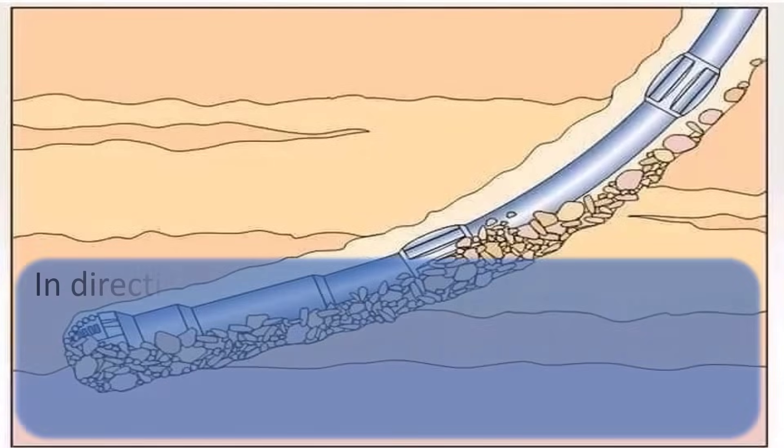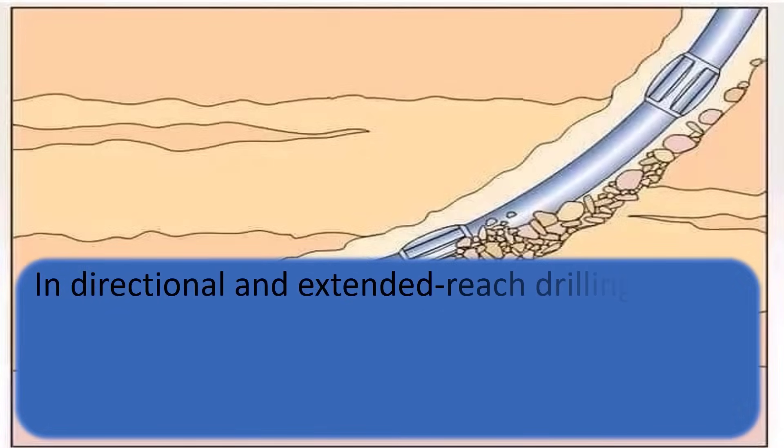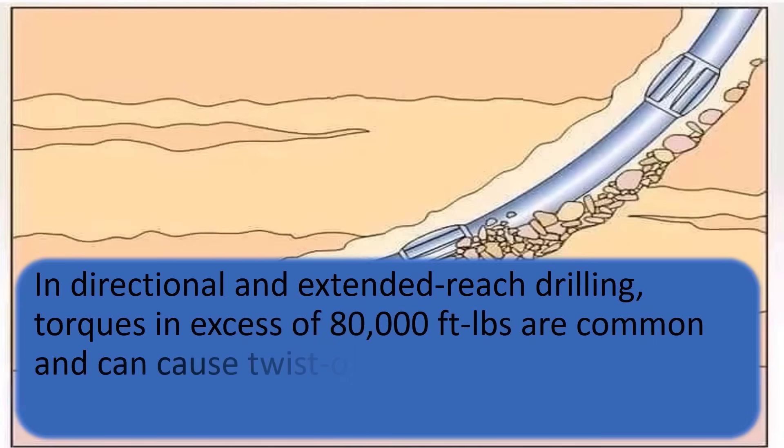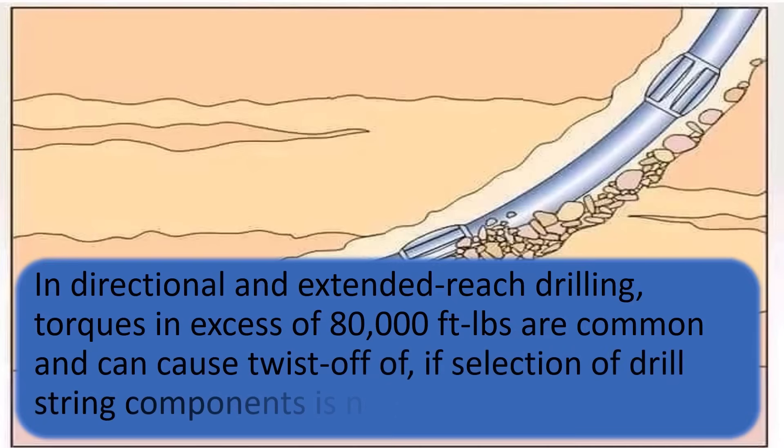However, in directional and extended reach drilling, torques in excess of 80,000 feet-pounds are common and can cause twist off if selection of drill string components is not done properly.